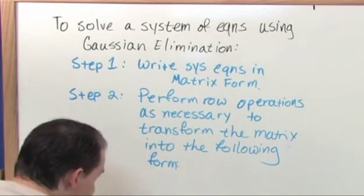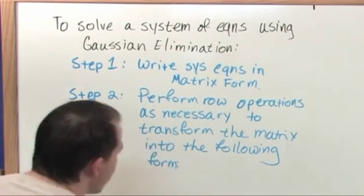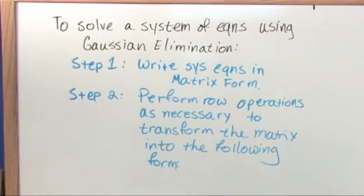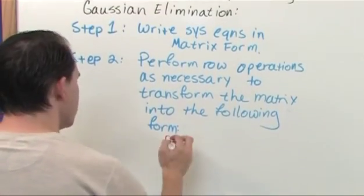What is that special form of a matrix? I'm going to use red here. The form that we're basically going to be trying to chase our tail until we reach is going to look like this. We're going to have one.